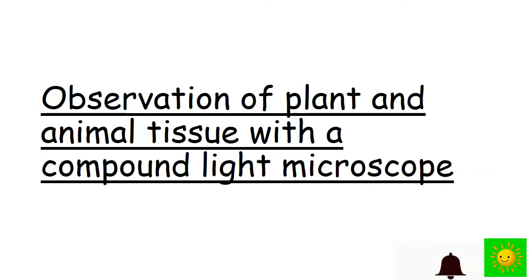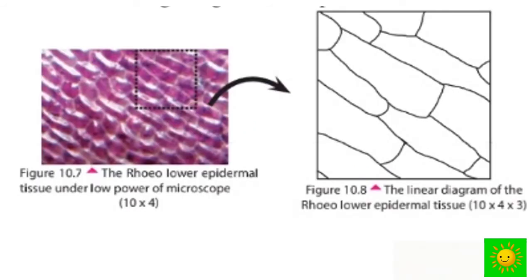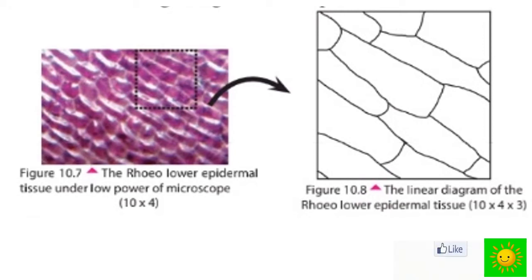Let's observe plant and animal tissue with a compound light microscope. You can see the linear diagram of the onion low-epidermal tissue and the image of the onion low-epidermal tissue under low-power microscope. In the first picture, within brackets, there are 10 and 4 — that is the magnification of the eyepiece and magnification of the objective lens. When drawing the linear diagram, we add the number of times the visual image is magnified: 10 into 4 into 3.